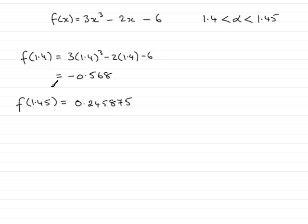So now what I've got is two values. And from a graphical point of view, if I was to just sketch the graph or part of the graph of f(x), what I find is that when x is 1.4, we've got a negative value, minus 0.568. So let's just imagine it's this point here.